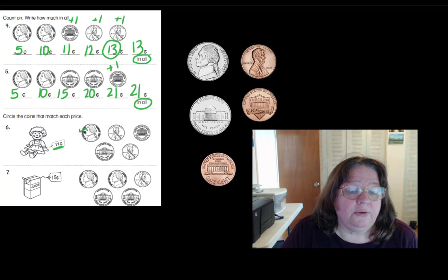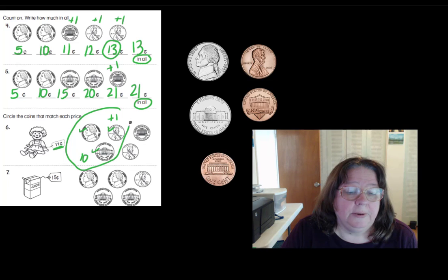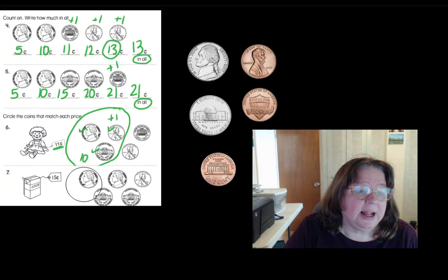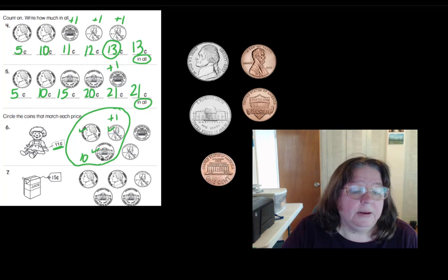One more nickel. Five and five is ten. I'm going to write ten down. So we're really close. Ten. And let's just add one more penny. Five, ten, ten plus one, eleven. There we go. I'm going to fix this down here. That's kind of getting into that next problem. There.